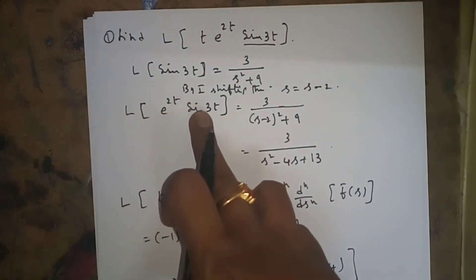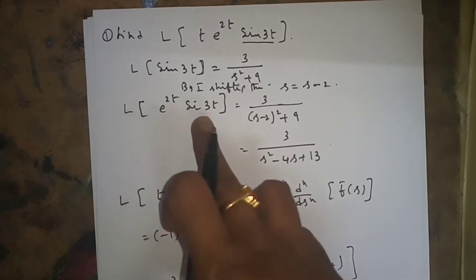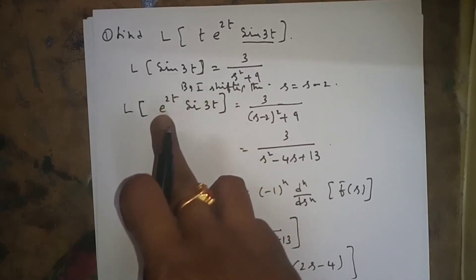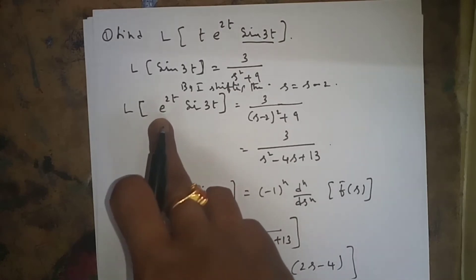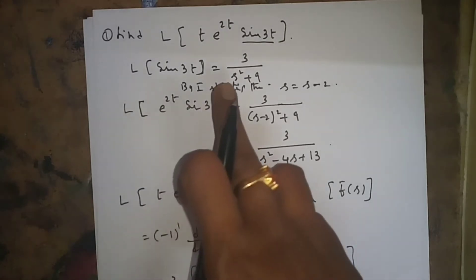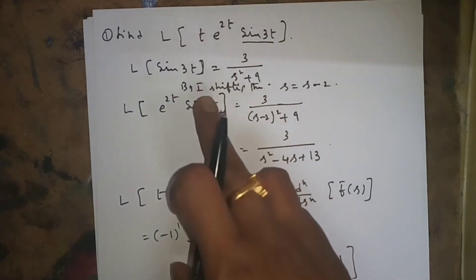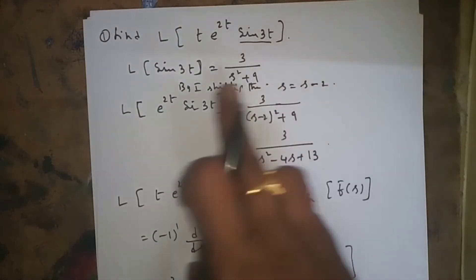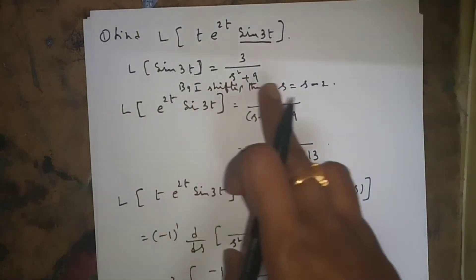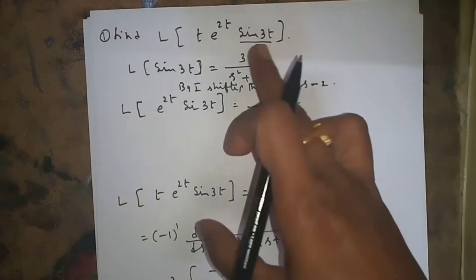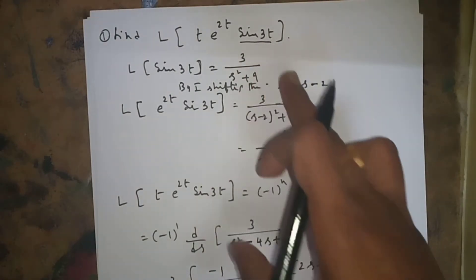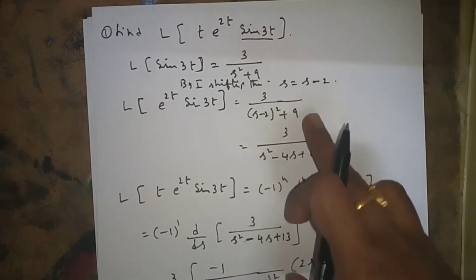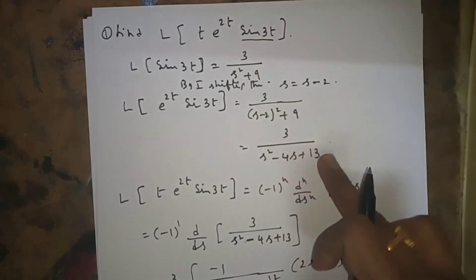Next, we find L{e^(2t) · sin(3t)}. Since e^(at) is present, we apply the First Shifting Theorem. By the First Shifting Theorem, substitute s → (s - 2) wherever s appears. So s² + 9 becomes (s-2)² + 9, which expands accordingly.